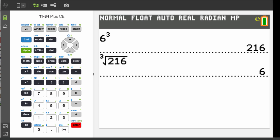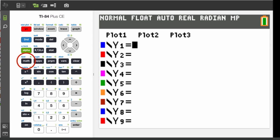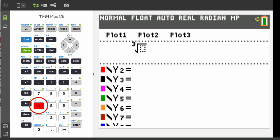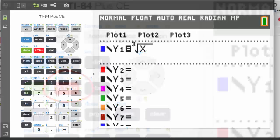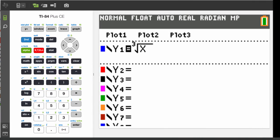You can also use the cube root when graphing functions. Go to the graphing editor by pressing the y equals key, and then math, 4, and then press the key marked with x, t, theta, n. That inserts an x, and you're ready to graph it.